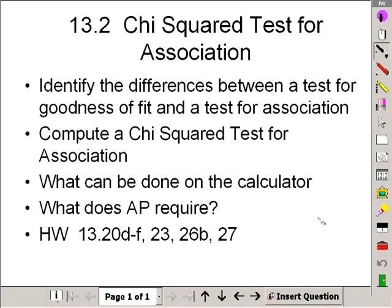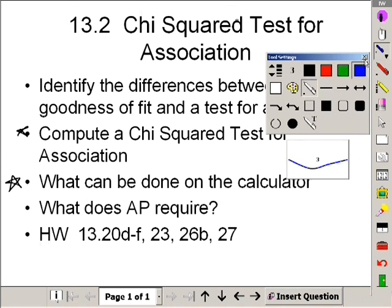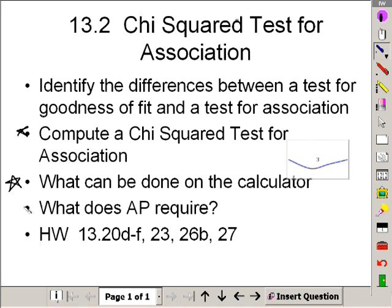For a chi-squared test for association, you're trying to see if there is any relationship between two or more items. Not to be confused with a scatter plot, but this will be pretty straightforward. I want to show you how we do this. And also, this one here is extremely important: what do we do on the calculator, and what does AP require? We'll do some work and then we'll go backwards.